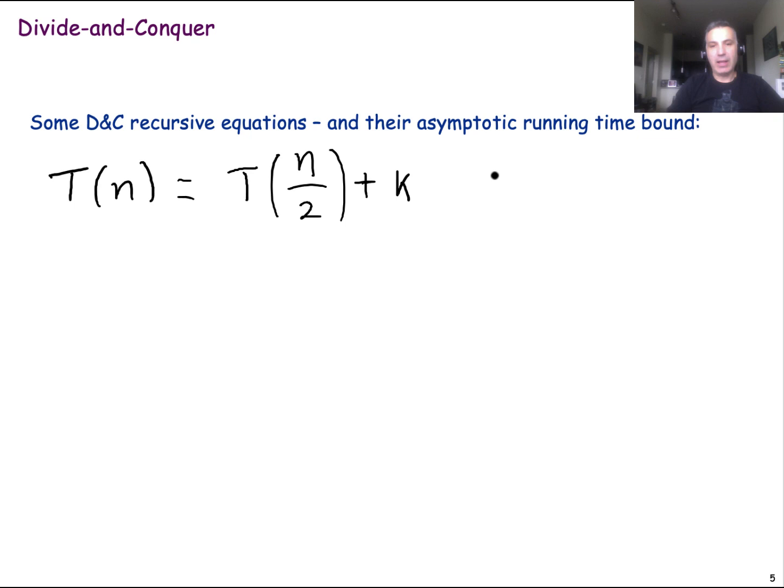Another way that you could write this would be T of n is equal to T of n over two plus big O of one. This means that this is a constant time operation. So we will see that for this recursion, we will prove that T of n is big O log n, that it increases logarithmically.